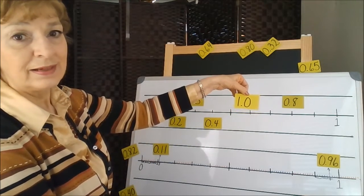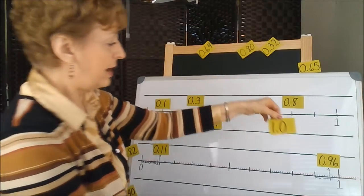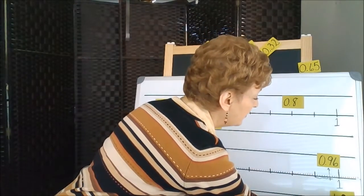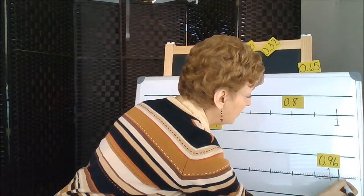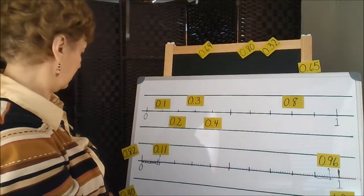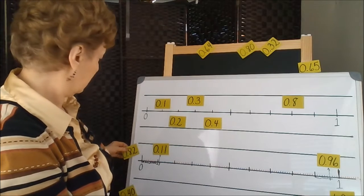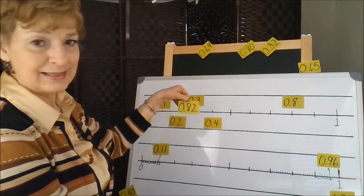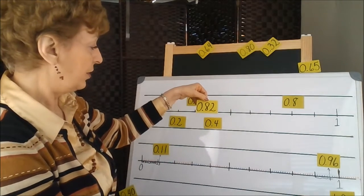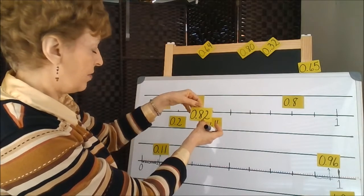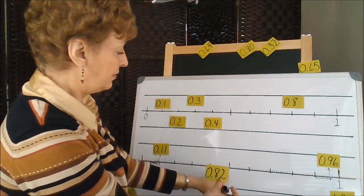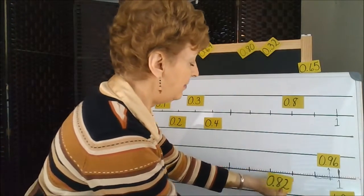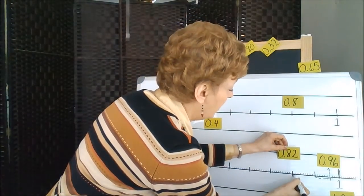This one is 1. It's a whole number. It's way over here at this mark right there. Let's place 0.82, 82 hundredths: 10, 20, 30, 40, 50, 60, 70, 80, 81, 82.